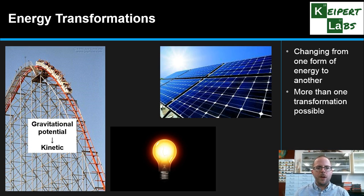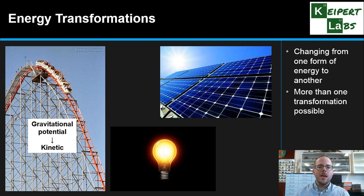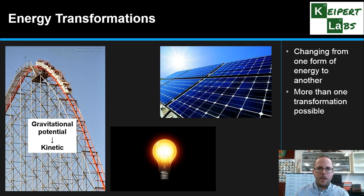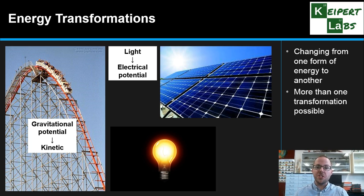If we look at our roller coaster, we go from gravitational potential energy when it reaches the top of the crest, and then as it starts to come down the other side it has kinetic energy — it speeds up — and then as it comes up to the top of another crest, the opposite transformation might be happening. If we take a look at our solar panel, we have light energy from the sun being converted into electrical potential energy, or maybe straight electrical energy if it's being used to power something directly, or stored as potential if it's being stored in a battery or some sort of storage device.